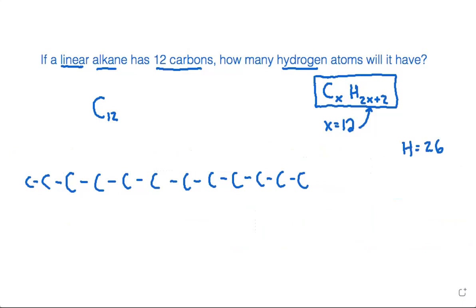So this carbon on the end has one bond so far, so it needs three more to make four total around it. This next carbon has two bonds next to it so far, so it needs two more.